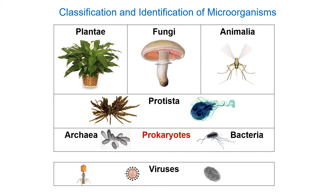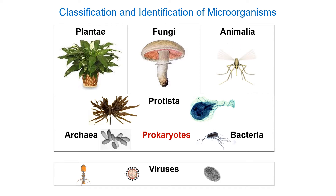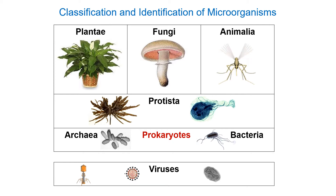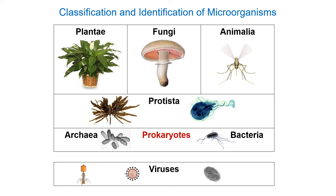We have three domains of living things: the Eukarya, which consists of the Plantae, Fungi, Animalia, and Protista; then we have domain Bacteria and domain Archaea. These are grouped together into the prokaryotes based entirely on their structure and not on their biochemistry.